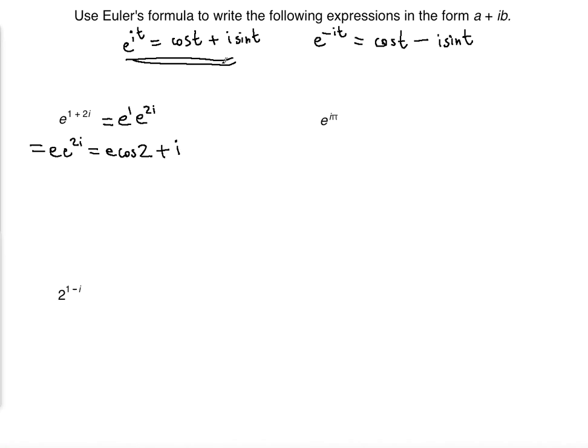Plus i, because i is part of the formula. There's an i in the power. i sine of 2, and that's it. You have successfully written the first example in the form of a plus ib.